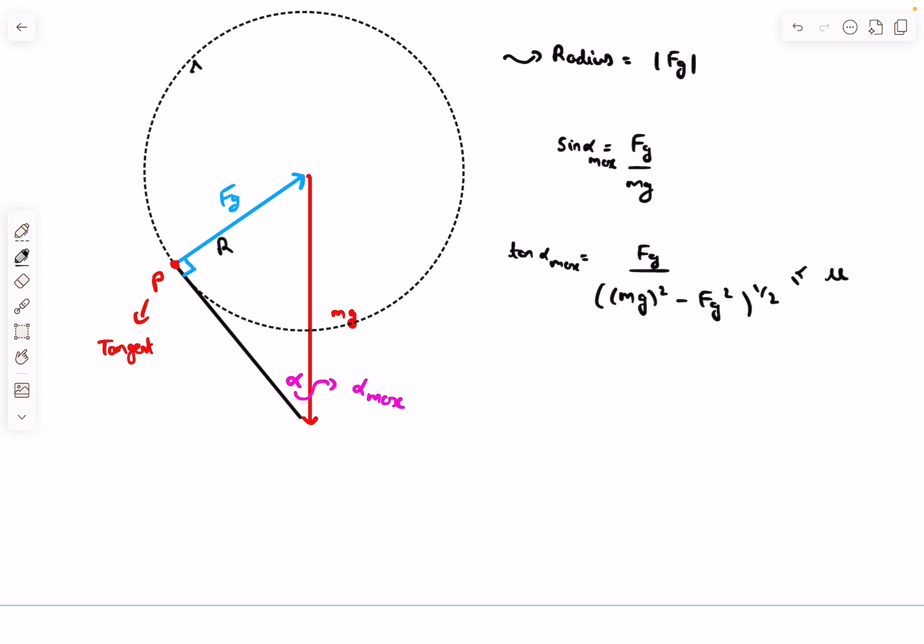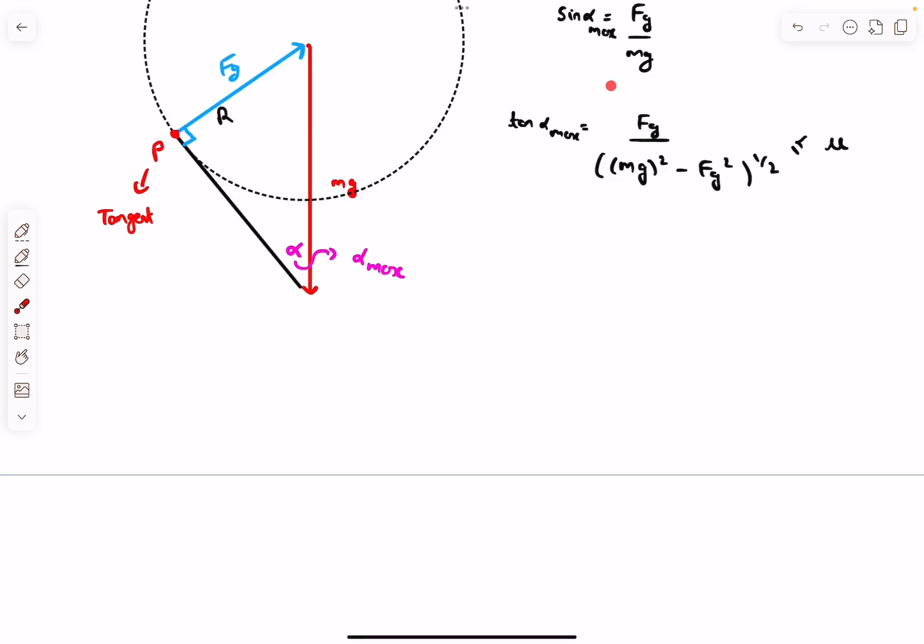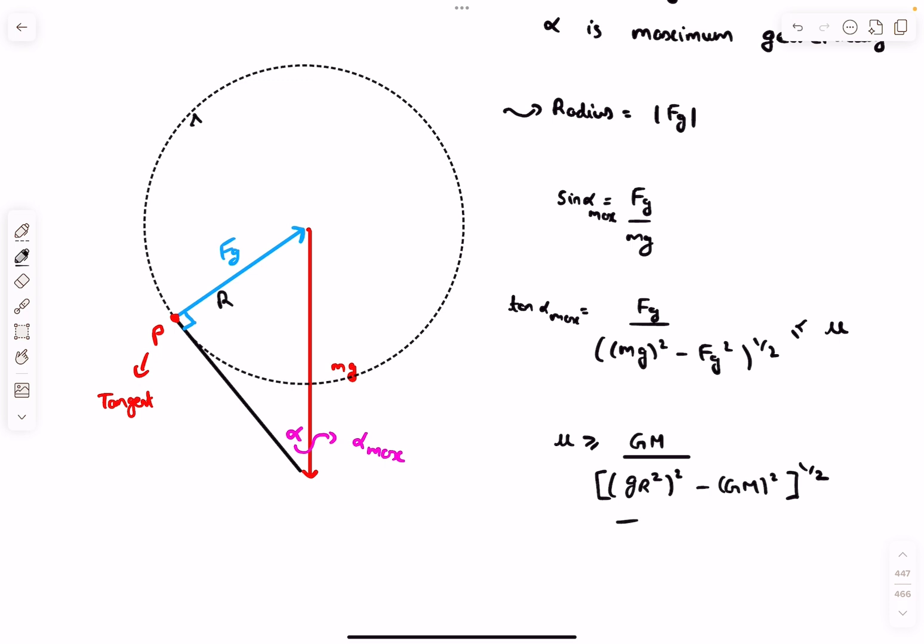To ensure the cube doesn't slip, we have to ensure this should be less than or equal to μ. We just ensure that the maximum value of tan alpha does not exceed μ. Now we put in the value of Fg and you'll get this as the final answer, which is option C.